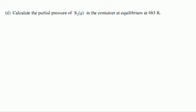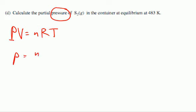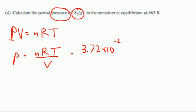Moving on to D. D is going to ask us to calculate the partial pressure of S2 in the container at equilibrium. Well, whenever you see this word pressure, we have to go to the equation sheet and get our equation for pressure, which would say that since PV equals NRT, P equals NRT over V. N is the moles, and we know that S2, the moles, was 3.72 times 10 to the negative 2. We know that R is the ideal gas constant.